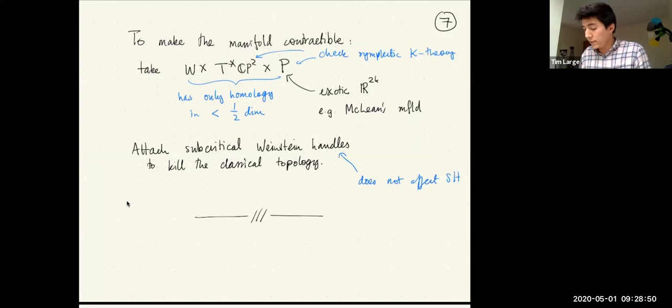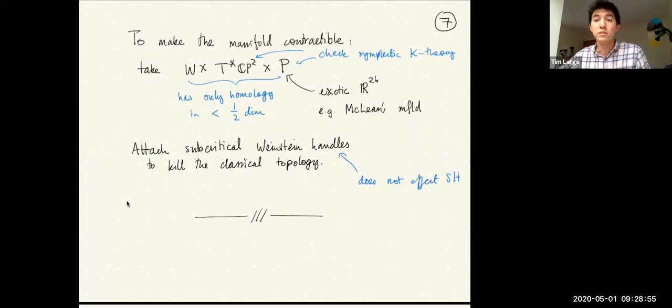What I've told you is a recipe to build a contractible Liouville manifold with zero symplectic cohomology with coefficients in the integers, but with nonzero K-theory. This also involves checking what the symplectic K-theory of these two manifolds are, but in both cases this is not hard because the manifolds are explicit. That ends the first part of my talk.